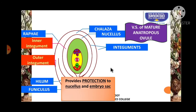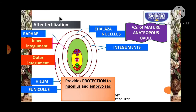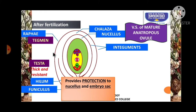After fertilization, the ovary develops into the fruit and ovules become seeds. The outer integument and inner integument are then converted: the outer integument becomes the testa, which is the outermost covering of the seed — thick and resistant. The inner integument becomes the tegmen, which is the innermost seed coat — thin and transparent.